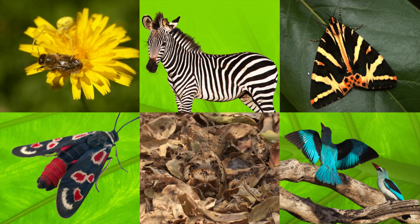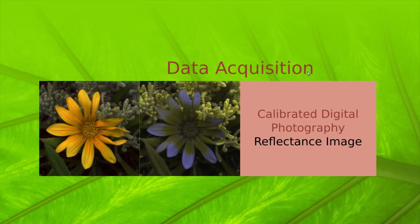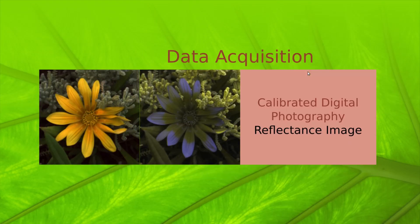I'll start with a brief overview of the toolbox and framework functions. First, the toolbox allows you to acquire calibrated digital images. You can use almost any digital camera to acquire these images, the caveat being that if you wish to model ultraviolet sensitivity in your receiver, you'll need a camera that is sensitive to both the human visible and the ultraviolet part of the spectrum.